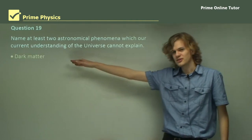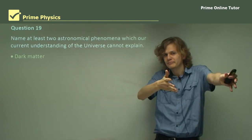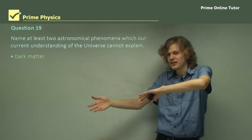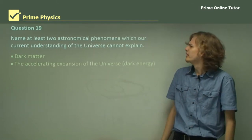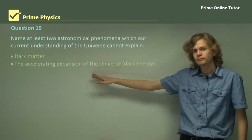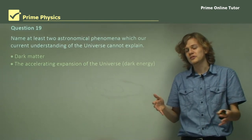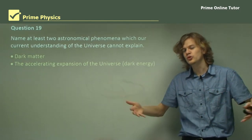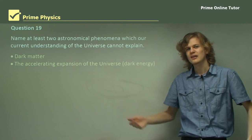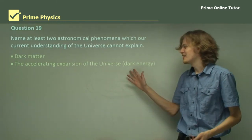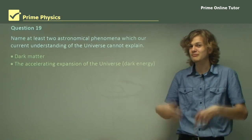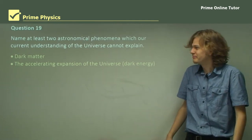We have dark matter. We know it's out there. We can't see it, so we call it dark. And we don't really know what it is. The accelerating expansion of the universe. Something is causing the expansion of our universe to speed up. We don't know what it is. Some people call the energy that's causing the universe to speed up dark energy. Once again, dark because we don't see it. We don't know what it is.